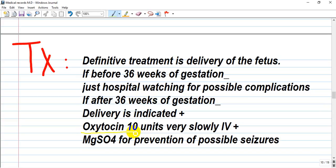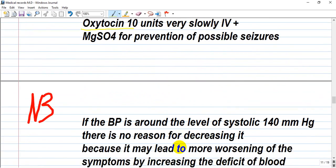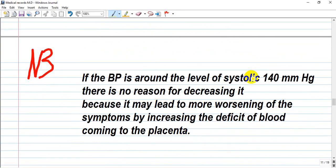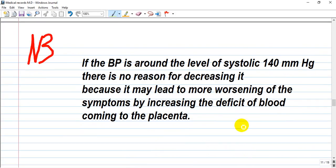In hospitals are used oxytocin, like 10 units dissolved in a solution like normal saline solution and very slowly infusing. Magnesium is given for preventing seizures or possible seizures. If the blood pressure is around the level of systolic 140, there is no reason for decreasing it because it may worsen the symptoms by increasing the deficit of blood coming to the placenta. At this 114 mmHg, blood comes to the placenta, and if blood pressure decreases, less blood will come to this place.